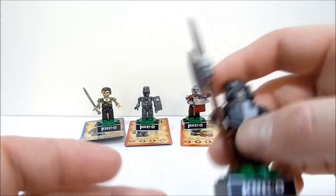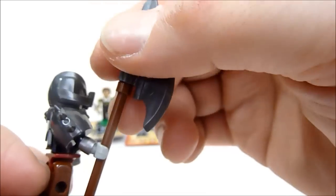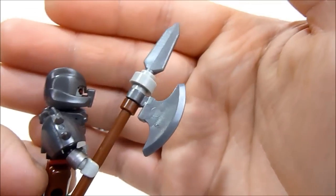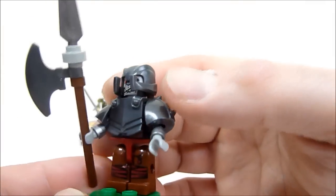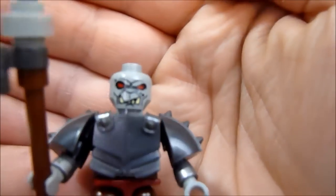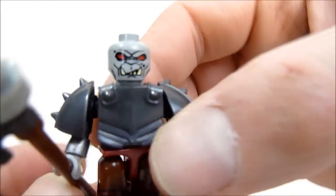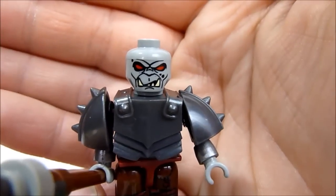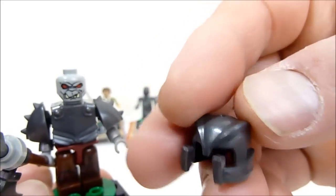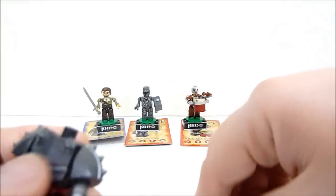Last but certainly not least is the Orc Fighter. This guy is armed to the teeth, or armored to the teeth I should say. He's got a big pole axe thing going on here, very cool. I'll show you his face real quick. He's got a very cool helmet going on as well.